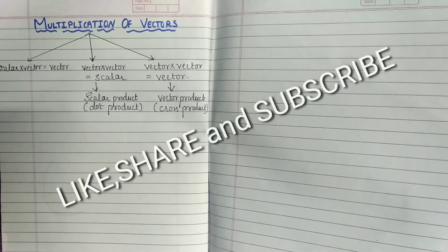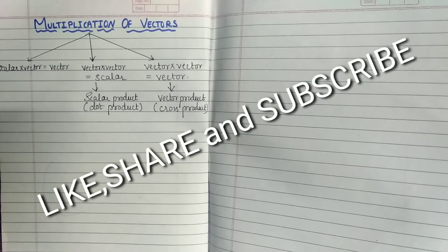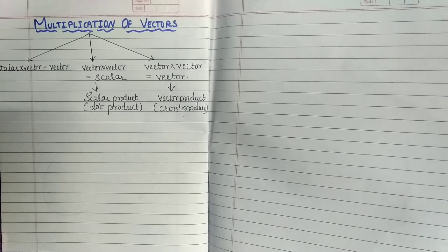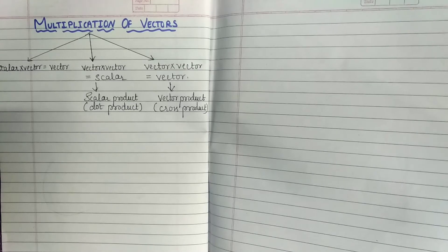We saw that we can add or subtract vectors of the same type to get resultant vectors of the same type. However, when we multiply vectors of the same or different types, we get a new physical quantity which may be either a scalar or a vector. Also note that multiplication of scalar with scalar is always a scalar.